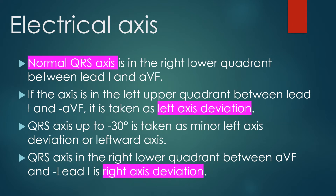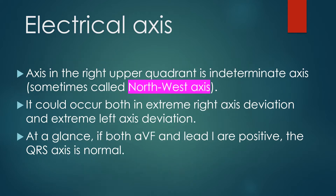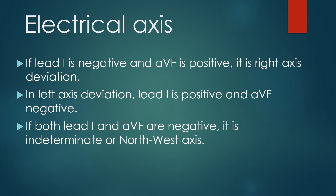Normal QRS axis is in the right lower quadrant between lead 1 and AVF. If the axis is in the left upper quadrant between lead 1 and minus AVF, it is left axis deviation. QRS axis up to minus 30 degrees is minor left axis deviation. QRS axis in the right upper quadrant is indeterminate or north-west axis, which can occur in both extreme right and extreme left axis deviation. At a glance: if both AVF and lead 1 are positive, the QRS axis is normal; lead 1 negative and AVF positive indicates right axis deviation; lead 1 positive and AVF negative indicates left axis deviation; and if both are negative, it is indeterminate or north-west axis.